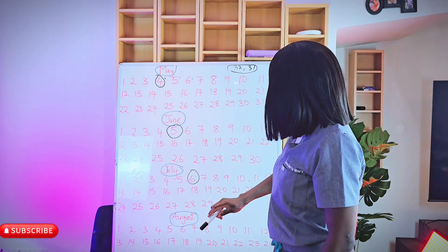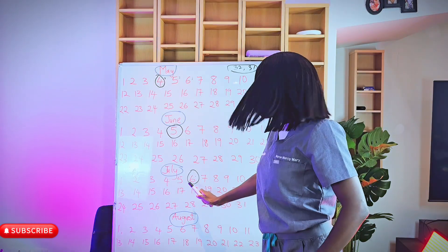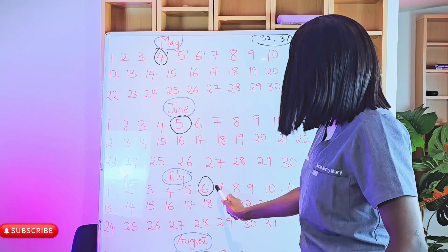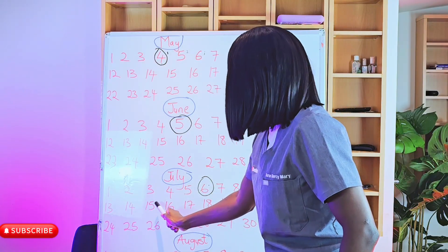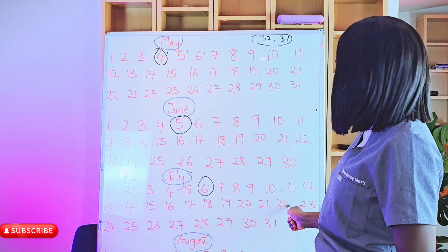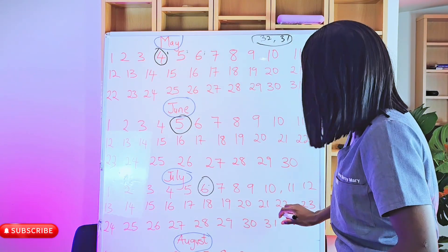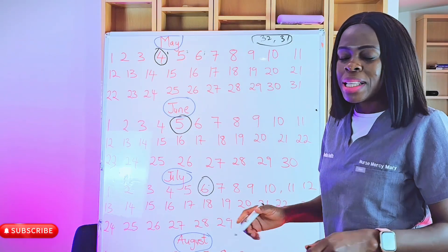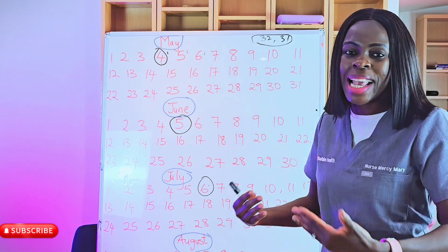Let's say we stopped at July 6th — so we're going to count 17 days from July 6th. That's going to be the person's ovulation. So it's going to be: 1, 2, 3, 4, 5, 6, 7, 8, 9, 10, 11, 12, 13, 14, 15, 16, 17. From that calculation, this person's ovulation is July 22. So this person is likely going to ovulate on July 22 — that's the estimate. You add plus or minus 2 to get the range.